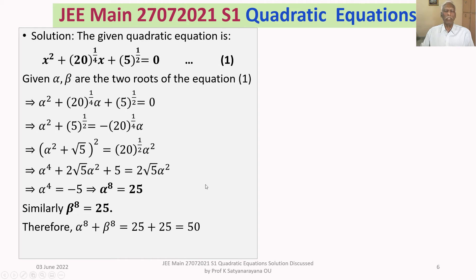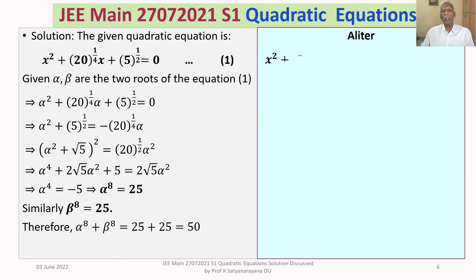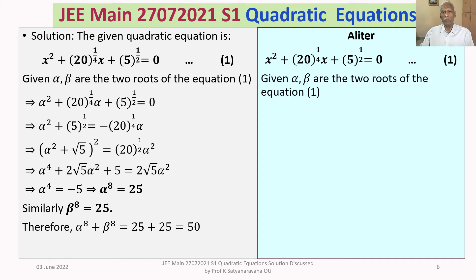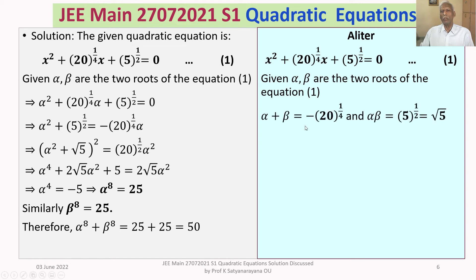This is one method of doing this question. I will show you an alternate method — the alliter. We have the same quadratic equation, and alpha and beta are its two roots. Normally, a student will write: alpha plus beta, the sum of the roots, equals minus b by a — that is, minus the coefficient of x by the leading coefficient — which gives alpha plus beta equals minus 20 to the power of 1 by 4. And the product of the roots, alpha beta, equals c by a, which is 5 to the power of 1 by 2, that is root 5.